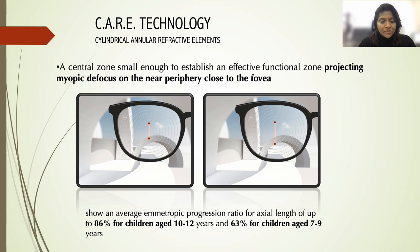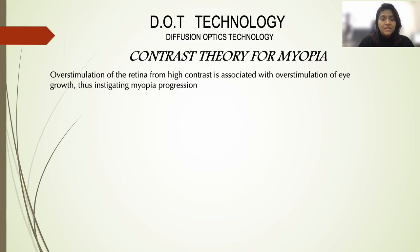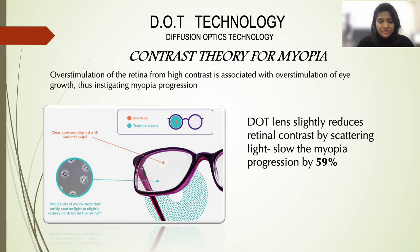The latest technology is the DOT — Diffusion Optics Technology — used in spectacles to control myopia progression. This uses the contrast theory for myopia rather than the hyperopic defocus theory. The contrast theory states that overstimulation of the retina due to high contrast is associated with overstimulation of eye elongation, thereby increasing myopia progression. These lenses have a central clear area for myopia correction while the periphery is completely covered with micro dots that scatter light, reducing the contrast of light falling on the peripheral retina. They have been studied to reduce retinal contrast and myopia progression by 59 percent.